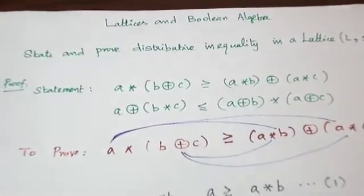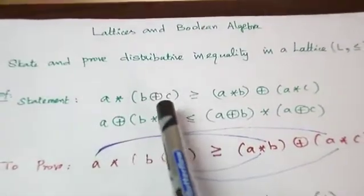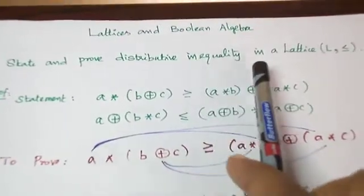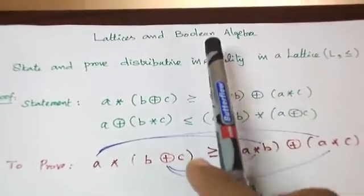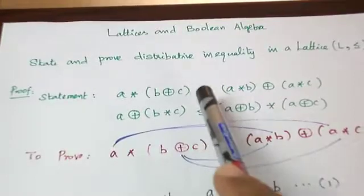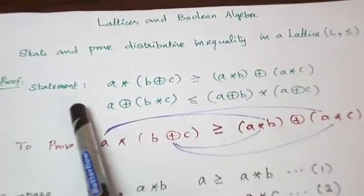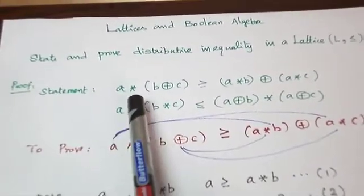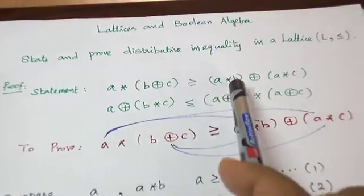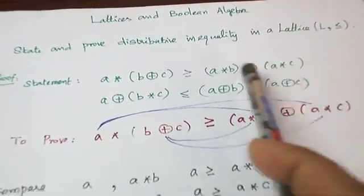Hello students, today let us see distributive inequality in a lattice from the chapter Lattices and Boolean Algebra. The statement is: A★(B+C) is greater than or equal to A★B + A★C.